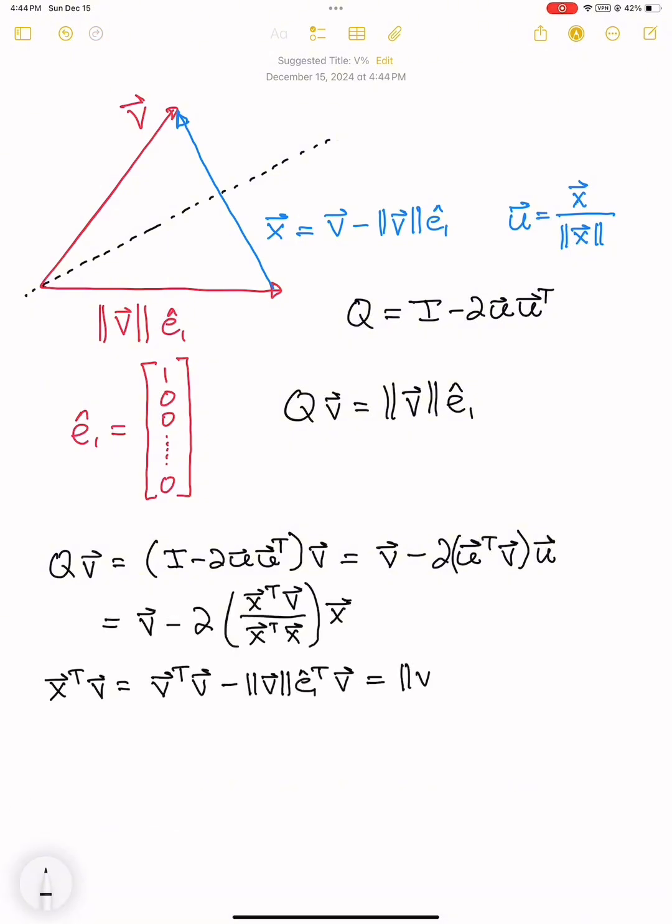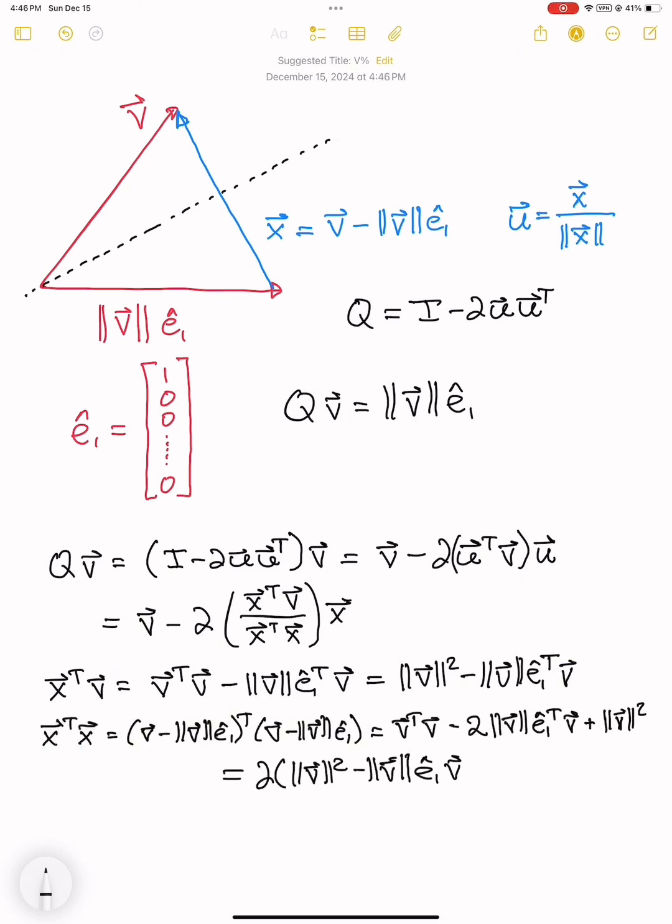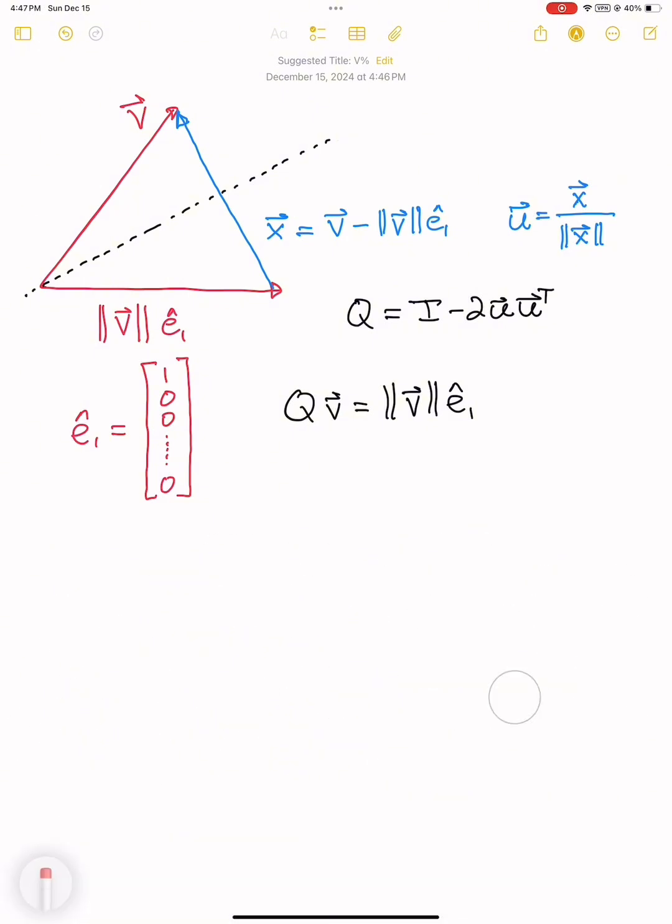The idea behind the householder reflection is to turn a vector v into a new vector that has the same length, but whose first entry is the only non-zero entry in the vector. Our A matrix consists of column vectors v1 through vn. Our goal is to obtain the QR factorization of A.